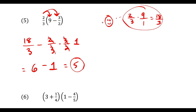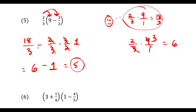As a side note: when doing 2/3 times 9/1, you could also divide first — 9 divided by 3 is 3, then 2 times 3 is 6. That's another way to get 6. You can multiply then divide, or divide then multiply.